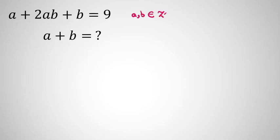So in the first step, let's write it again. First equation: a plus 2ab plus b equals 9. The idea, the key point is to multiply by 2. It will be 2a plus 4ab plus 2b equals 18.